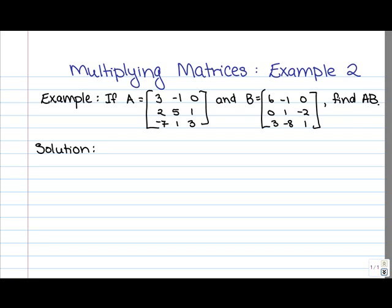For example, if you wanted to know the entry in position 2, 3 in the new matrix, that means you're working with the second row of A times the third column of B. So go ahead, try this out, and we'll take it up together once you're done.